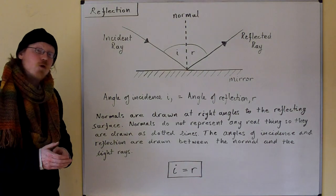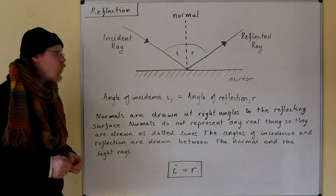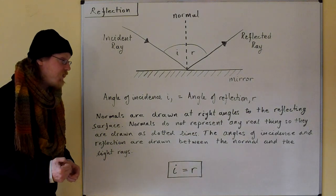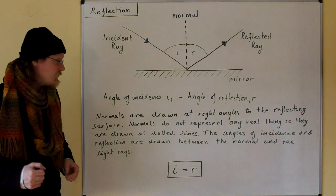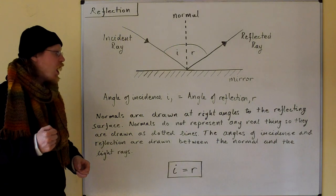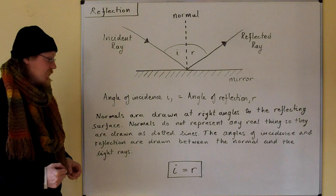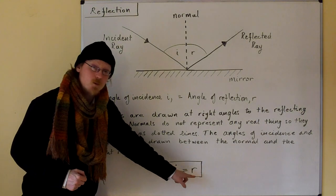Normals are drawn at right angles to the reflecting surface. Normals do not represent any real thing, so they are drawn as dotted lines. The angles of incidence and reflection are drawn between the normal and the light rays, and I equals R.